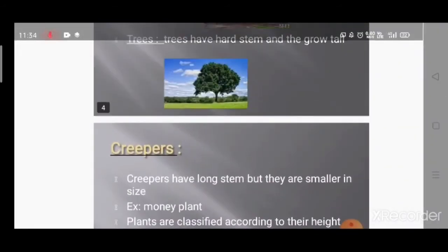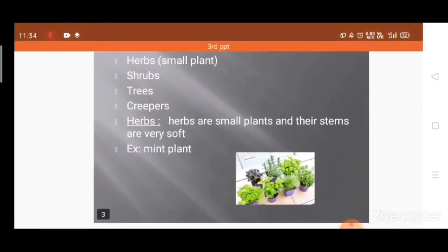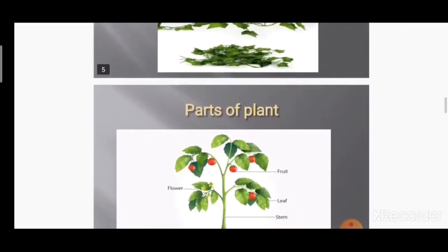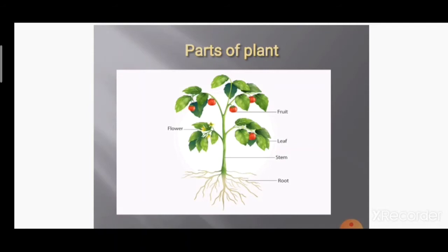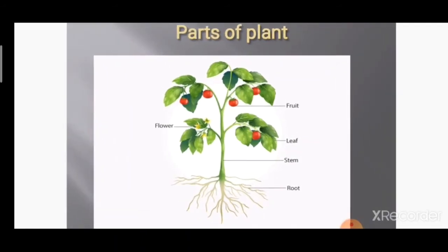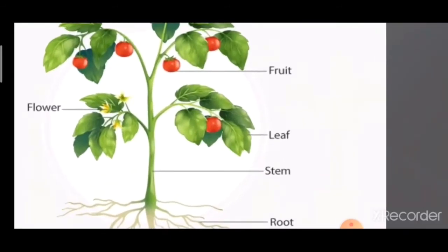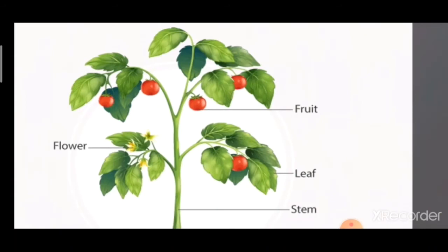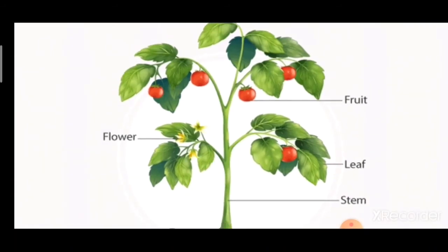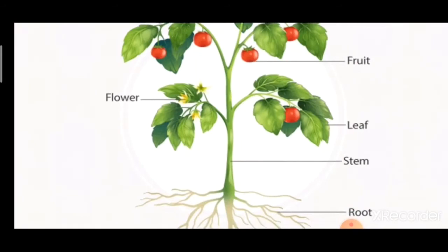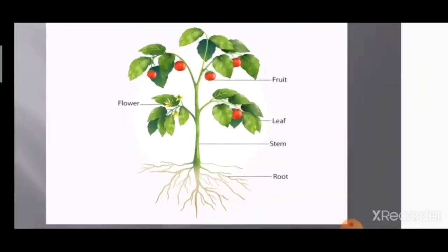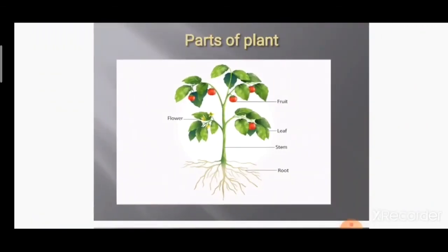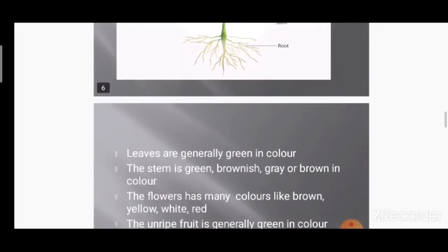The classification of plants includes herbs, shrubs, trees, and creepers. Now let's look at the parts of the plant. The bottom part is called the root, then there is the stem, leaves which are green in color, fruit — fruits can be any color, like tomato which is red — and flower which can be any color. The stem can be brown or green.